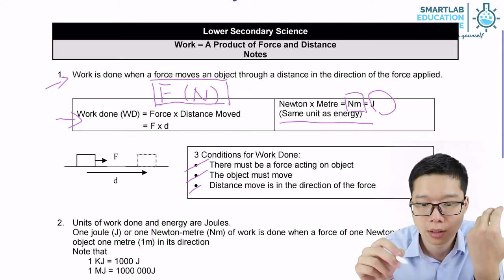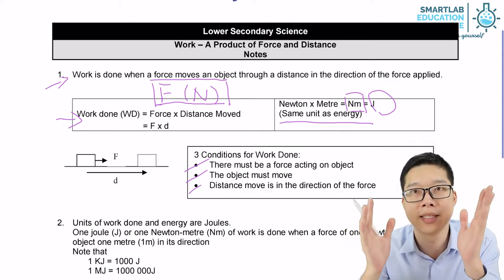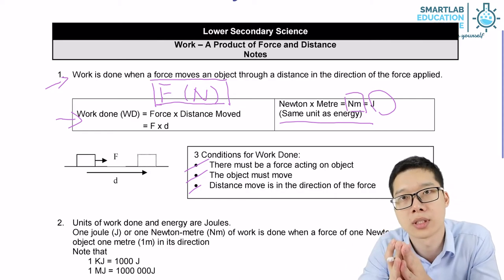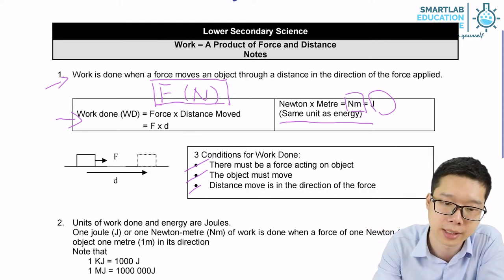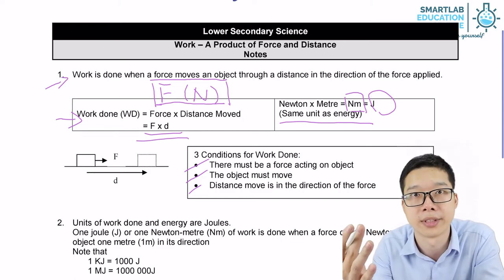So lastly, the direction moved must be in the same direction as the force. Then there will be work done. And then you can apply the formula: work done equals force F times distance D.